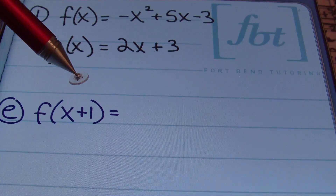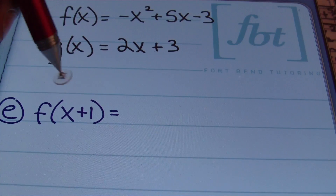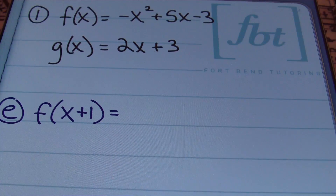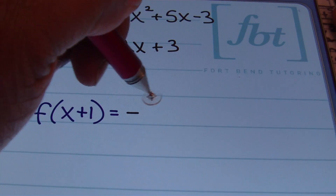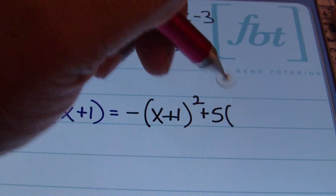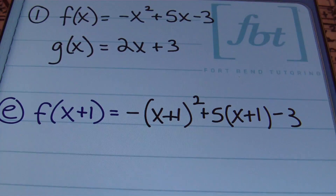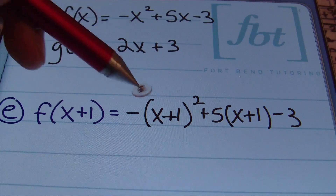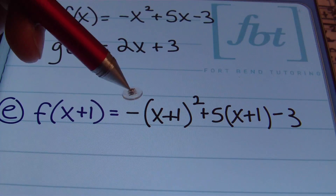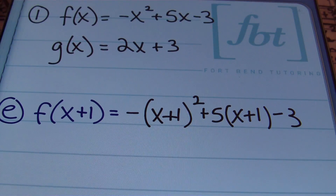Don't get caught up thinking, 'I have x in the original function, therefore I don't know what to do.' Just simply replace that x with exactly what they're telling you. In this case, they want you to replace it with x plus 1. We'll have negative quantity of x plus 1 squared plus 5 times the quantity of x plus 1 minus 3. Everywhere I had x in the original f function, I've replaced each x with the quantity x plus 1.